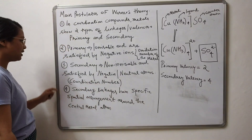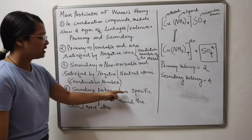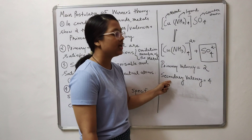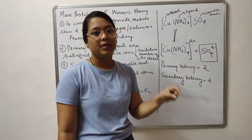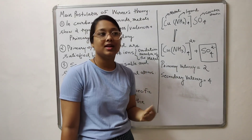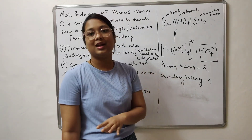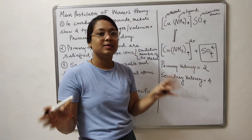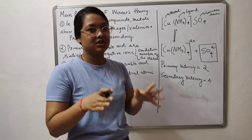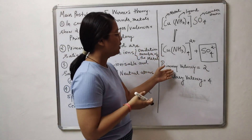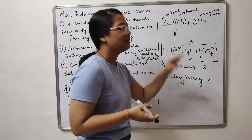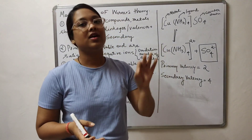The fourth postulate is again a part of the third one: secondary linkages have a specific spatial arrangement around the central metal atom. Depending on the coordination number, we have a spatial arrangement — if it is 6, then in most cases it is octahedral; if it is 4, it can be square planar or tetrahedral. To summarize: primary valency equals the oxidation state of the central metal atom, and secondary valency equals the coordination number.